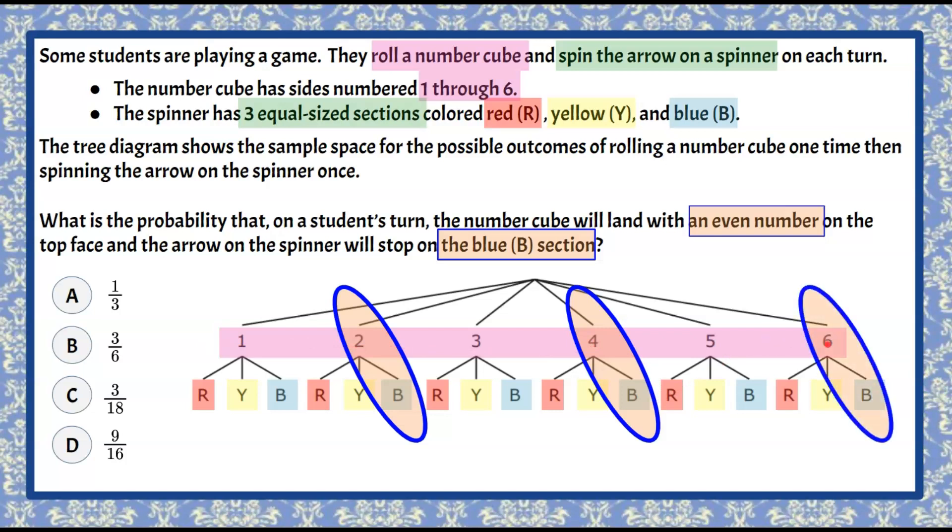And then our next even number is six and there's one possible blue on the spinner when you roll a six. So we can see that from our tree diagram there are three outcomes that could be even and blue.